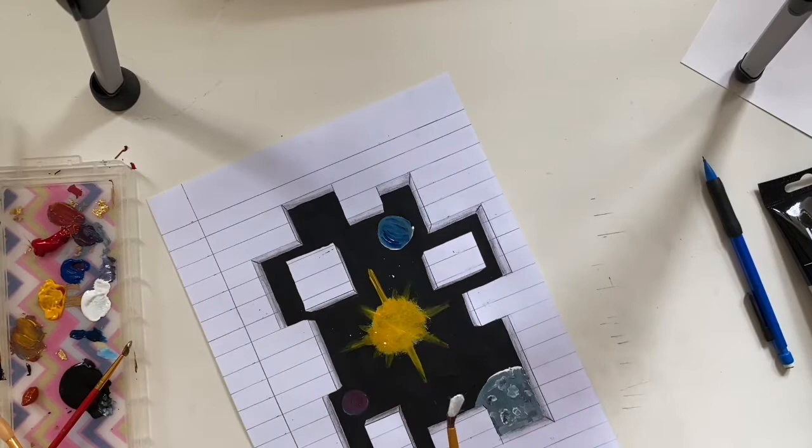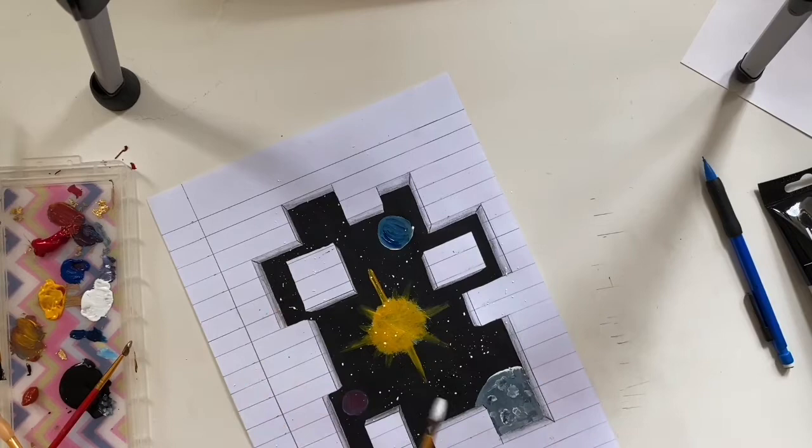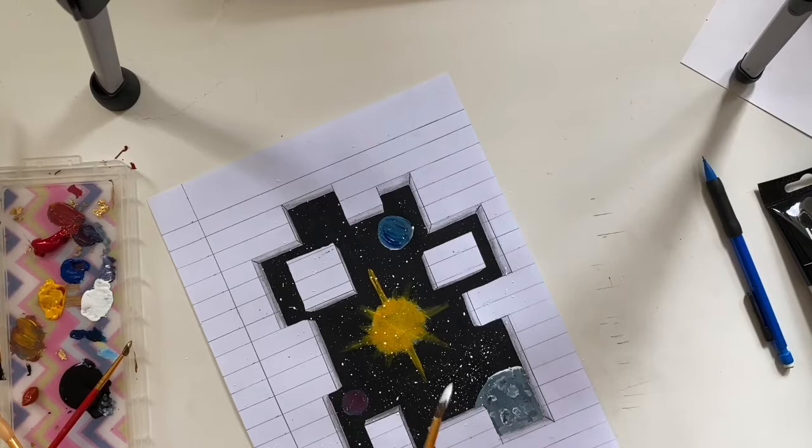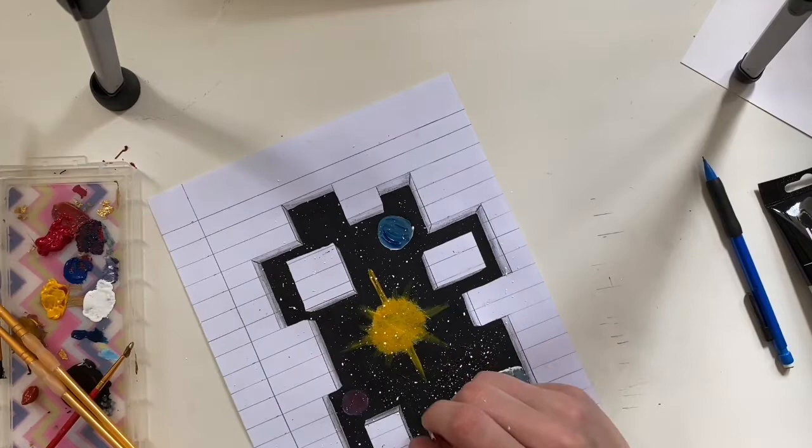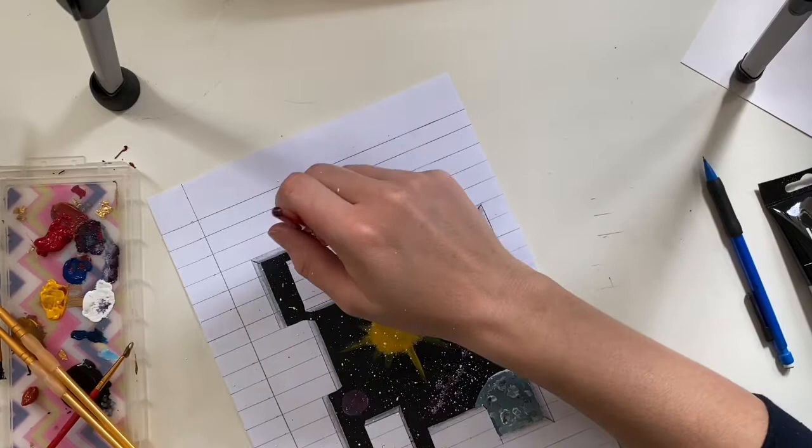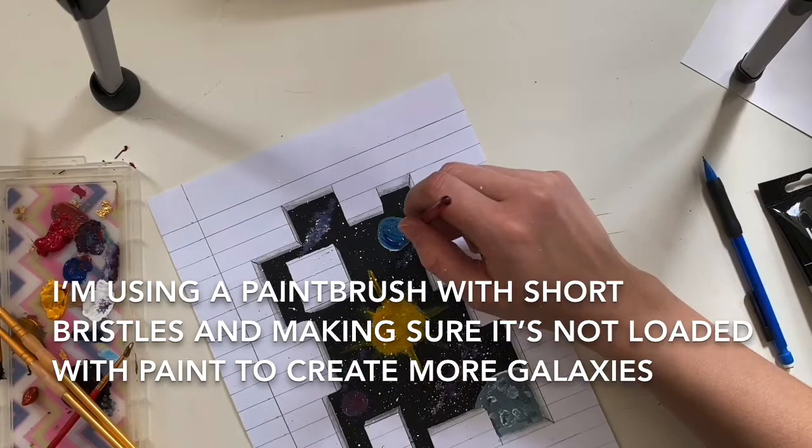All right. And coming up is the really fun part. So I just dipped my paintbrush into some white paint and using my finger to tap it, I am creating all my beautiful stars. This is what really makes it look like a galaxy in space. And it's super fun to do, but make sure that you aren't too messy.